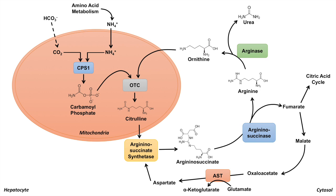How much ATP does the urea cycle cost? The CPS1 enzyme requires 2 ATP. Because it utilizes 2 ATP, it becomes an irreversible reaction — once the hepatocyte produces carbamoyl phosphate, it cannot go back to ammonia and CO2. The argininosuccinate synthetase reaction requires 1 ATP, but because you're actually converting ATP into AMP, it's equivalent to 2 ATP usage.